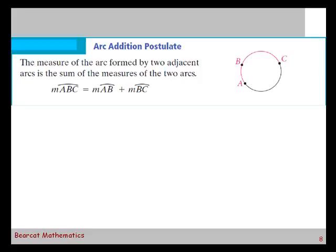It's the sum of the measures of the two arcs. So the measure of arc ABC in that diagram is equal to the measure of arc AB plus the measure of arc BC. Doesn't that look just like the segment addition postulate except it's applied to arcs?